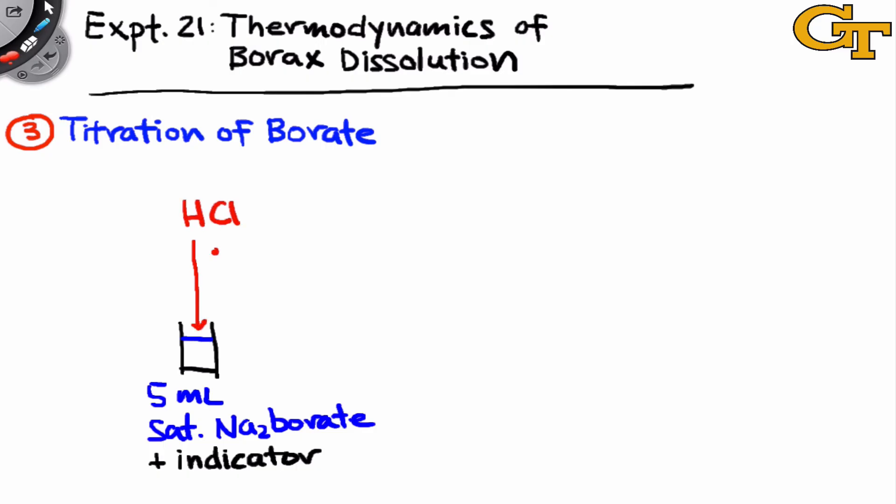We're going to use titration to consume the borate ion using an acid, specifically HCl. The exact concentration of the HCl will be known from a standardization experiment. We've applied standardization before, and the idea here, as it was before, is to determine a precise value for the HCl concentration, ultimately relying on the precision of a balance we use to measure out a solid base that we titrate with the HCl.